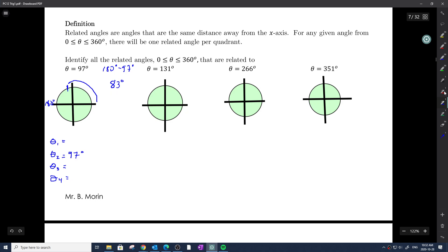What does that mean? It means that we are 83 degrees away from the closest x-axis. Now what I am going to do is create all angles that are 83 degrees away from the closest x-axis, one per quadrant. In quadrant 1, this angle would be 83 degrees. Quadrant 2, it would be 180 degrees minus 83, which incidentally is 97, the one that we had.